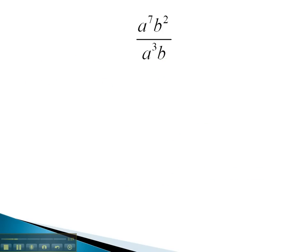In this first problem, we see a to the 7th over a to the 3rd. Again, we will subtract those exponents, 7 minus 3, to get a to the 4th power.